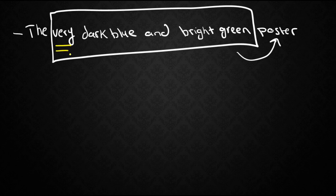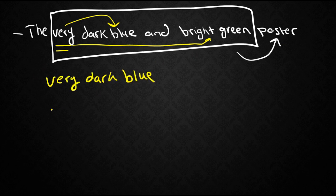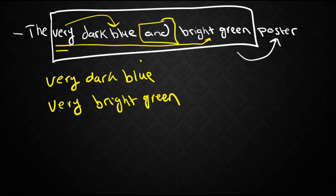What does very here modify? It seems to modify dark blue and bright green as well. So the poster really is very dark blue and it is also very bright green. How is that going to work? Second thing we want to think about is that we also have here coordination. That means these must somehow be constituents on their own.